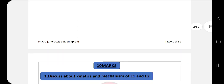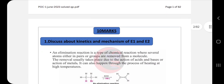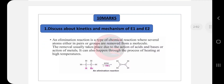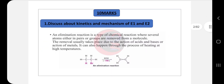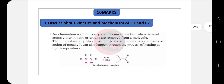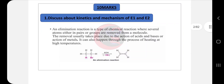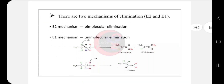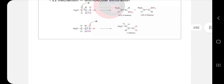The 10-mark question: discuss the kinetics and mechanism of E1 and E2, that is elimination reactions one and two. This is a fixed question — they will ask it every time, either for 10 marks or 5 marks. First, write the definition of elimination reaction, then write the types: E1 (unimolecular) and E2 (bimolecular).